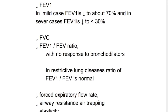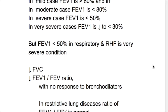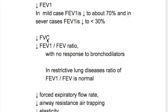Lung function tests in emphysema: parameters that are decreased include FEV1 — in mild cases FEV1 is more than 80%, in moderate cases less than 80%, in severe cases less than 50%, and in very severe cases less than 30%. FEV1 less than 50% with respiratory failure and right heart failure represents a very severe condition. There is also decreased forced vital capacity, decreased FEV1/FVC ratio with no response to bronchodilators (unlike asthma), decreased expiratory flow rate, decreased airway resistance with air trapping, decreased elasticity, and decreased diffusing capacity.